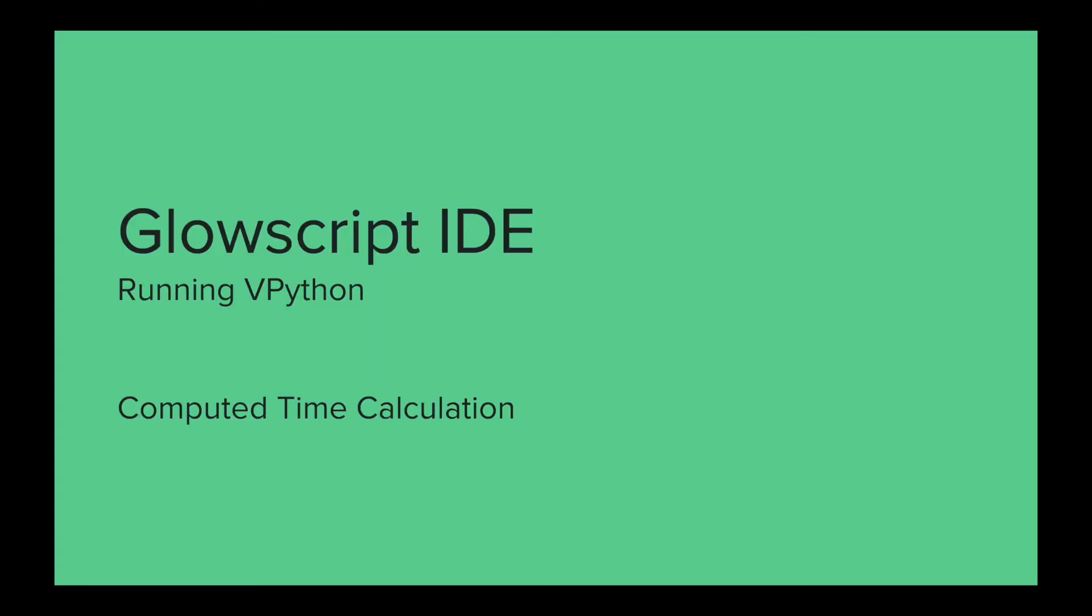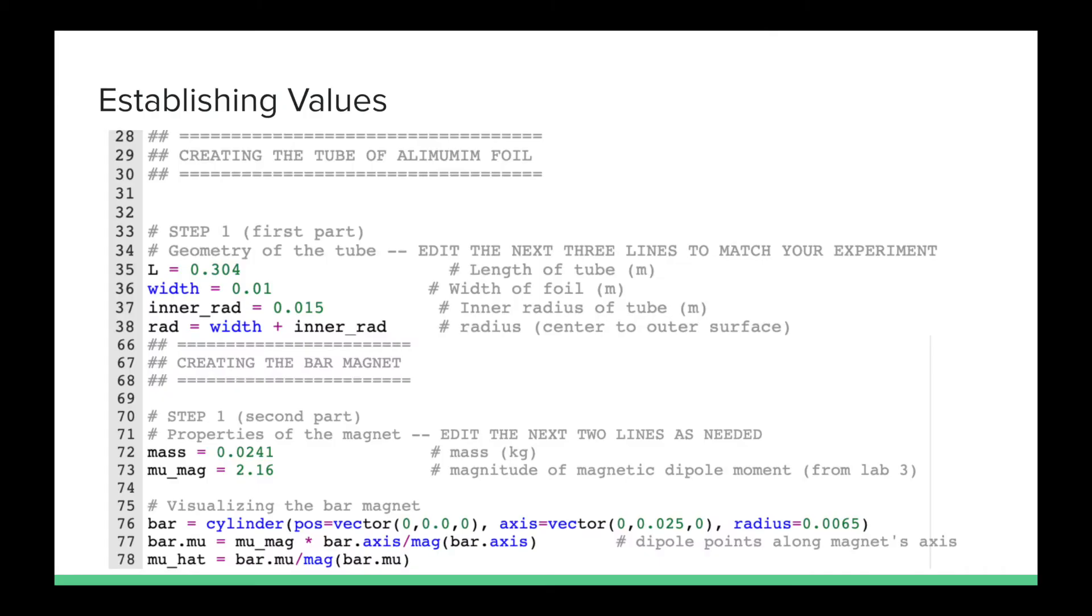In order to compare the experimental and computed times, we will be using Glow script to calculate the time taken for the magnet to fall through the foil. We first must establish the dimensions of the roll of aluminum foil, as well as the mass and magnetic dipole moment of the magnet, which is the same as previously mentioned.